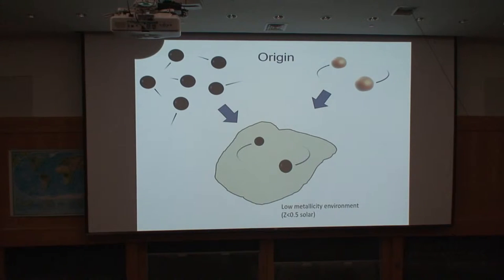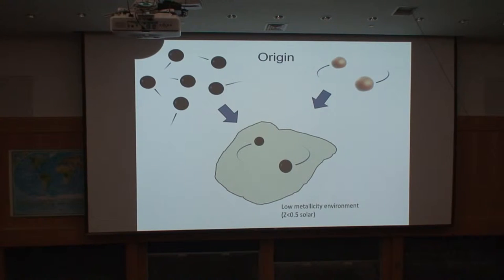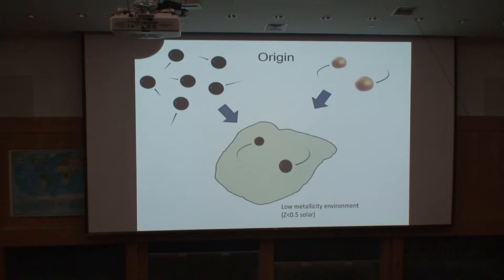The two black holes have roughly 30 solar masses each. It is a lot, actually. People were not expecting to see such large black holes. We know about supermassive black holes that are millions to billions times heavier than our sun. But below that, we weren't necessarily expecting very large black holes like this. The black holes we knew about indirectly were smaller.